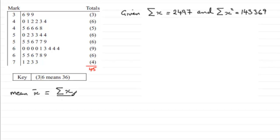We can see this value here is 2497, and we've got n, it was 45, there were 45 students. So let's just put those values in. We've got 2497 divided by 45, and if you do that division it turns out to be 55.4888 and so on.